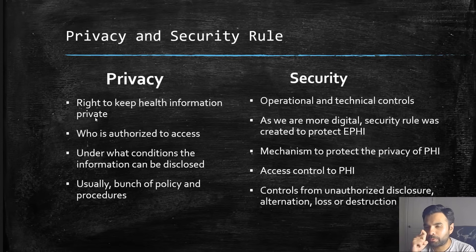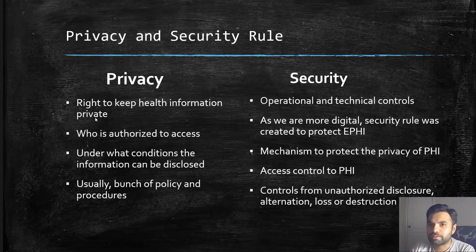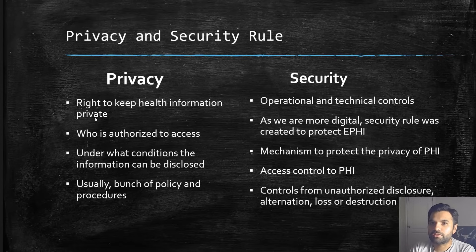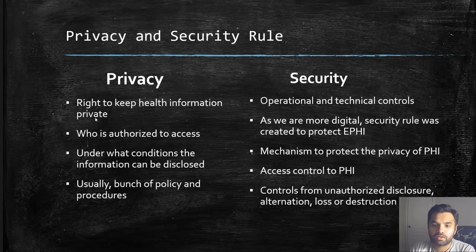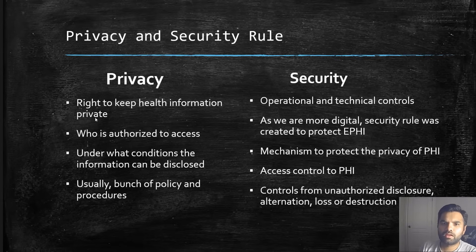The Privacy Rule says only authorized people can access patient data, but the Security Rule defines the technical mechanism behind that. You have an access control layer and different ways to authenticate users, ensuring only authorized users can access patient records. It also provides controls against unauthorized disclosure, alteration or tampering, and loss or destruction of data — including backup and data restoration procedures.